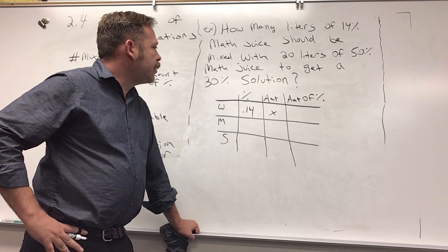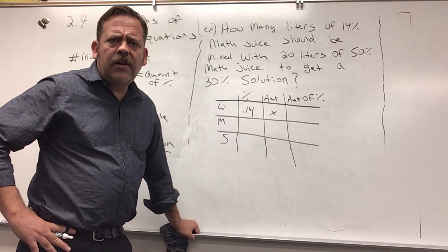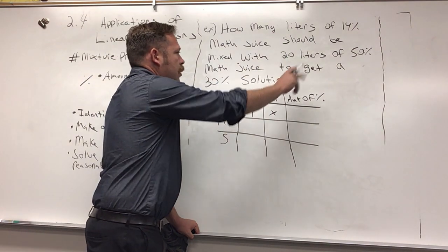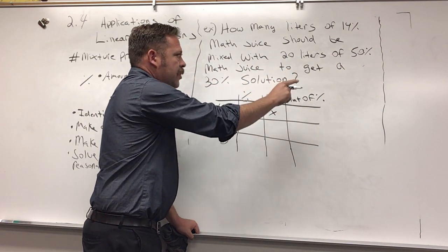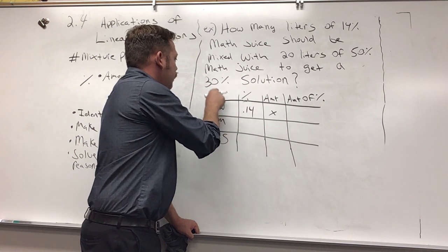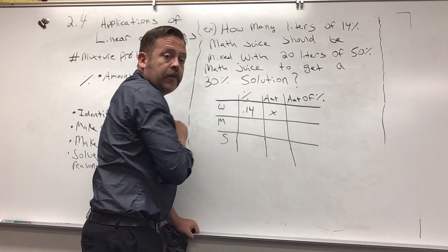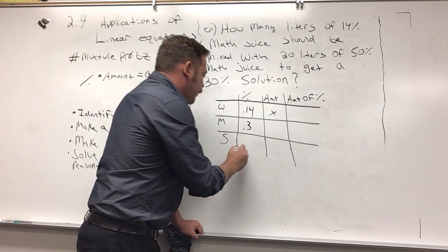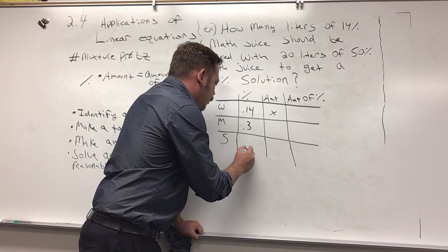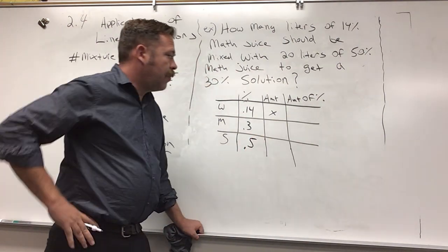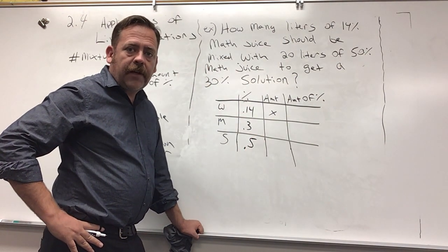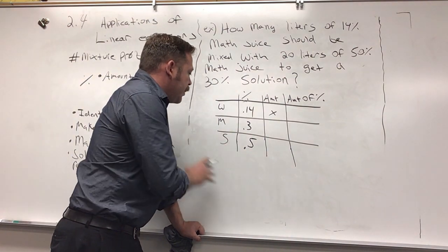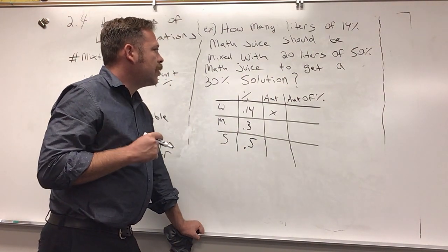Let's fill out what we can fill out. We know the percentages. What's the strength of my middle solution? I have a 50% solution that was way too strong and then a 30% solution, so 30% would be my middle strength and my strong solution would be 50%. I'm going to call it 0.3 and 0.5 respectively. Now which one of these do I know the amount of? It's given to us in the problem.